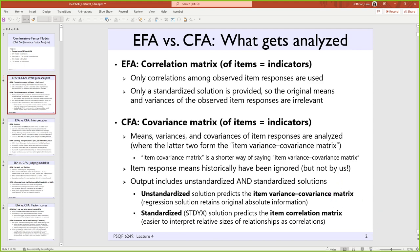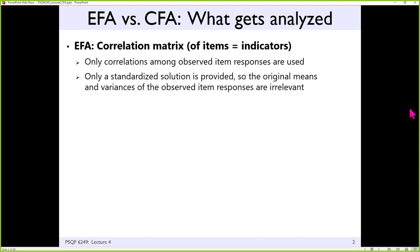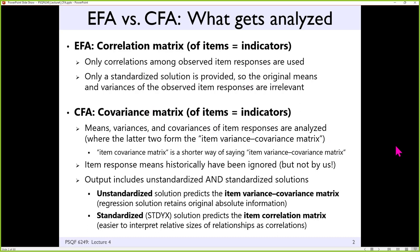EFAs are based on correlation matrices — they are matrix decomposition routines on correlation matrices for the most part. Where we are headed, we're going to examine means, variances, and covariances of items. So we will look at correlations as well, but we're sticking with the information in its original scale-sensitive form such that differences in scale will matter. A note on terminology: the term variances and covariances is formally described by a variance-covariance matrix, where variances are on the diagonal and covariances are on the off-diagonals. If you hear me say 'covariance matrix,' it means variances and covariances — it's just shorthand.